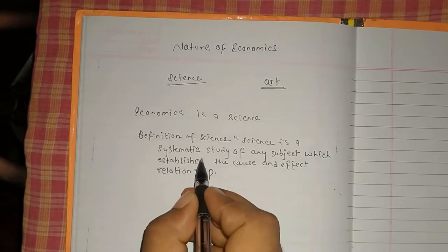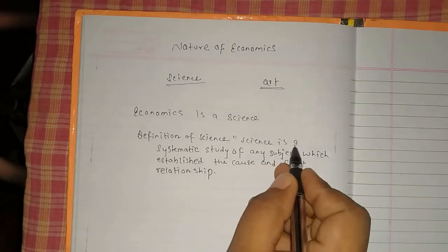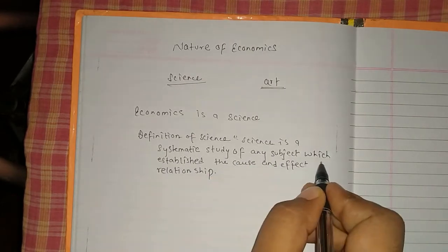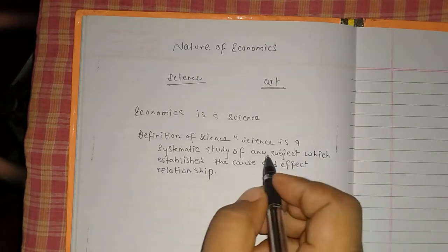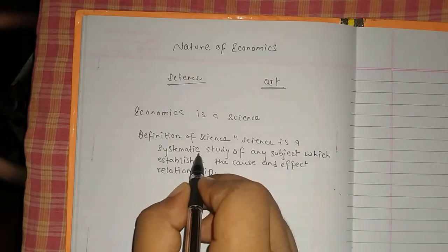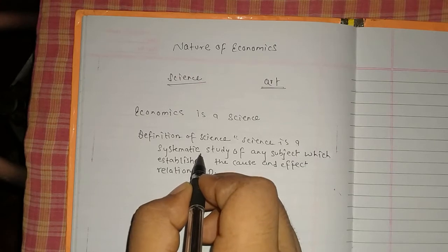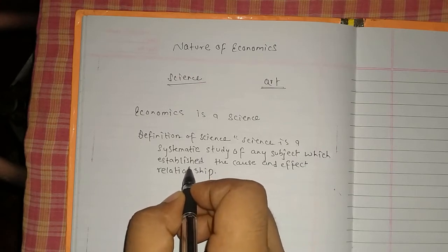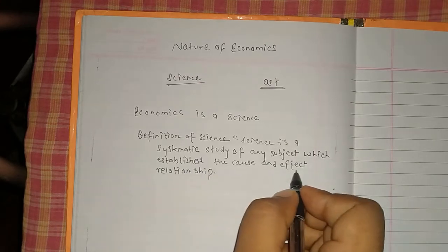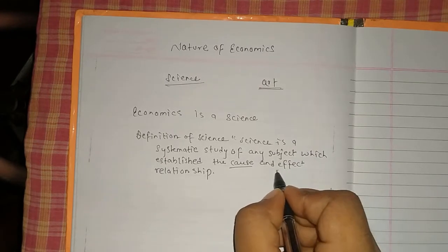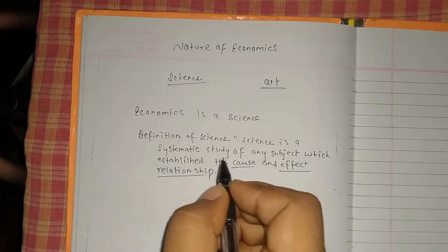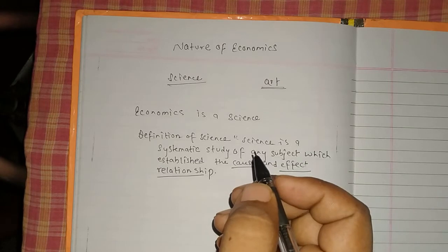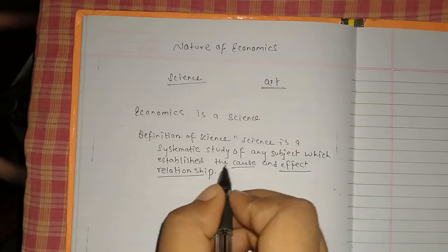Science is a systematic study of any subject which establishes the cause and effect relationship. In other words, science is a subject whose study establishes the relationship between cause (karan) and effect (prabhav). If economics also does this, then it is a science.